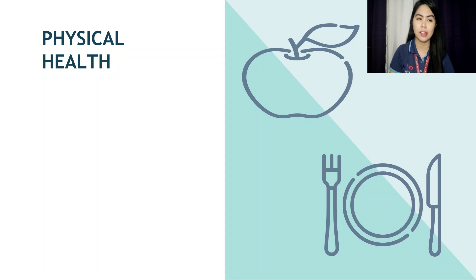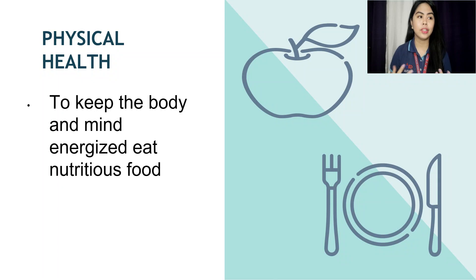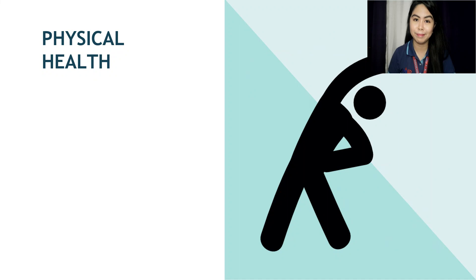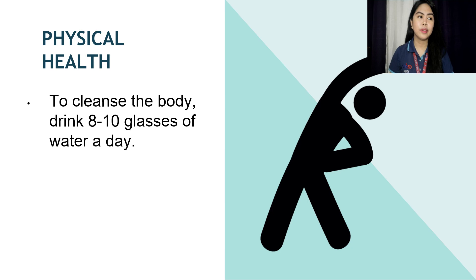There are ways to attain physical health. First, to keep the body and mind energized — eat nutritious food, such as fruits and vegetables. To prevent eating disorder, never skip meals or overeat. Skipping meals is not okay, and overeating is also not okay. Next, to cleanse the body, drink eight to ten glasses of water a day.